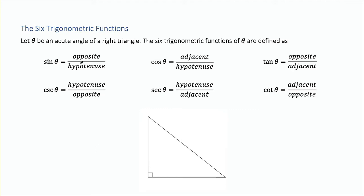We have six different ways to divide two of the three sides of a triangle. For a right triangle, we will label our sides of the triangle relative to a given angle. I'm going to let theta be one of the acute angles — not the right angle — of a right triangle.